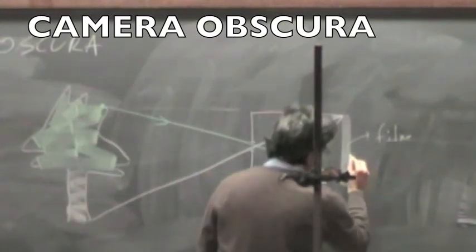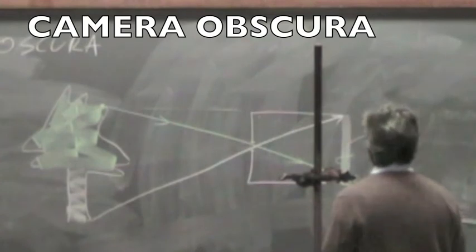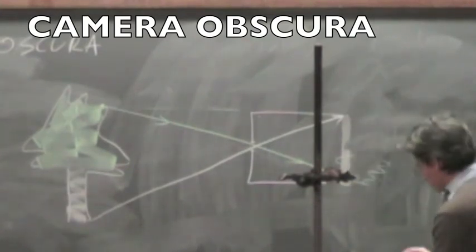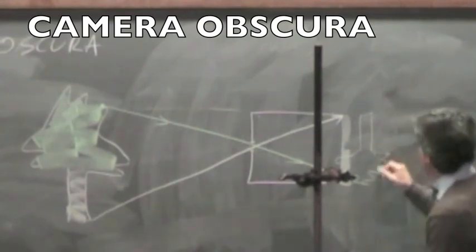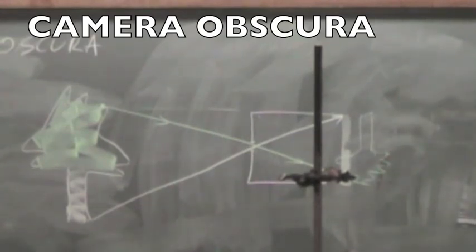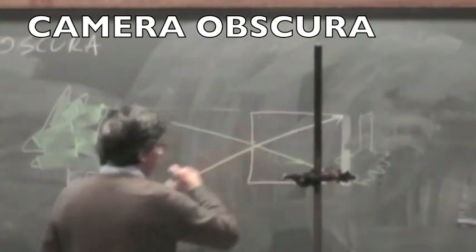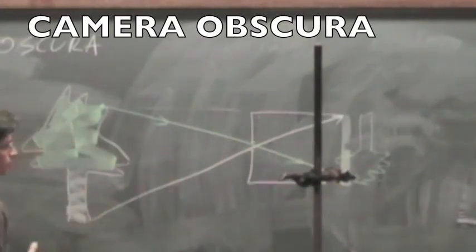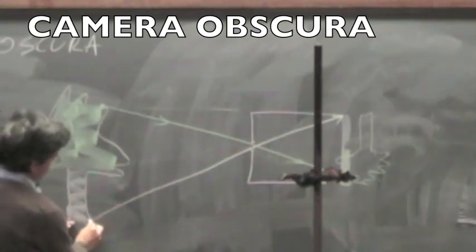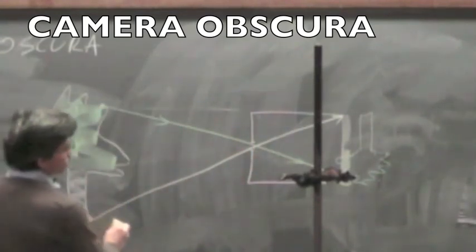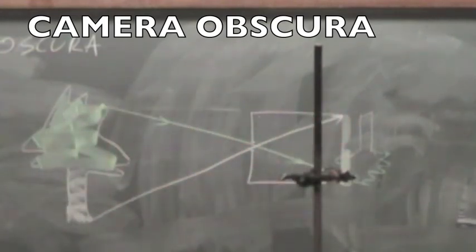What you end up having when you just simply make a box like this with a little hole is that you end up having an image of whatever is outside of the box, and the image is inverted. It is this opening here that discriminates between, that establishes a one-to-one correspondence between a location on the object and a location on the film, and that's exactly what you need to make the image of an object.